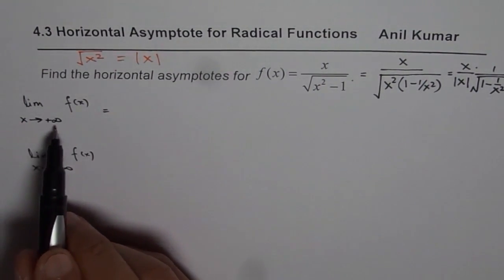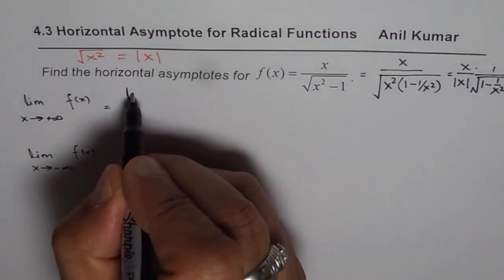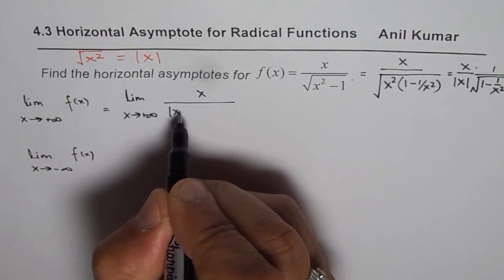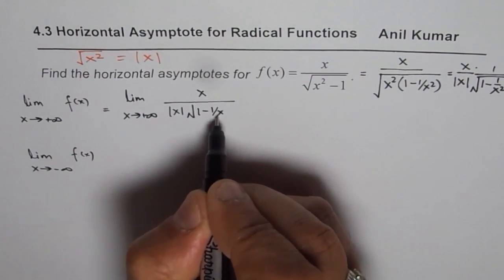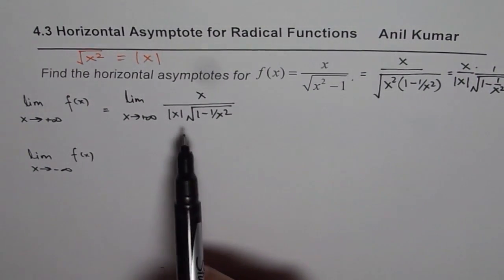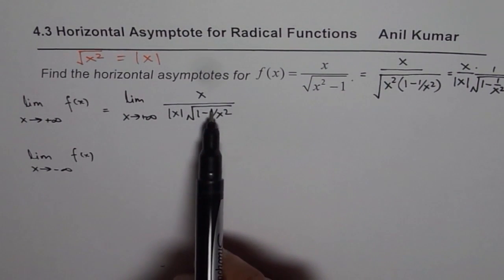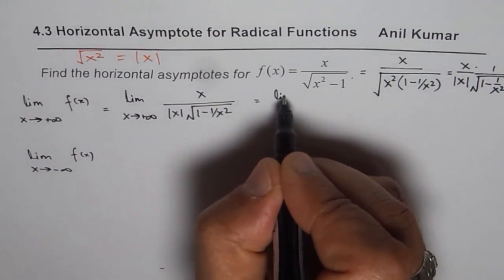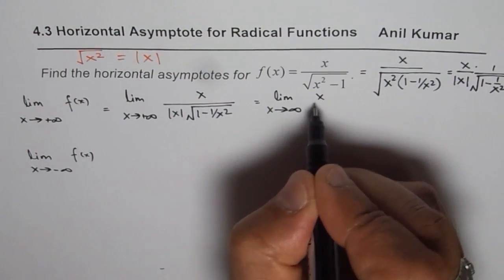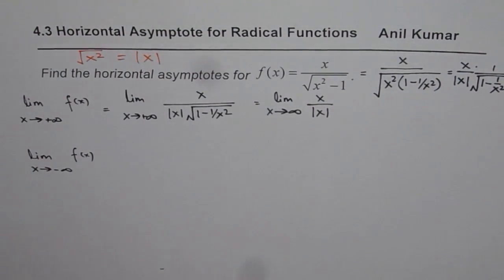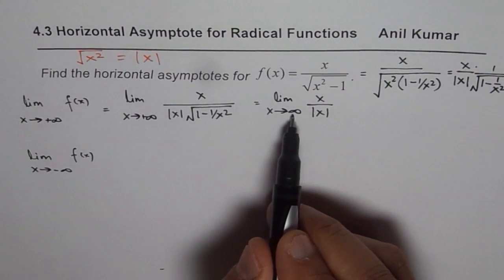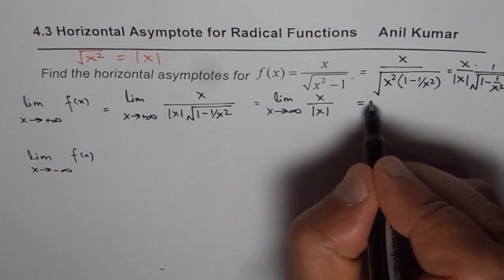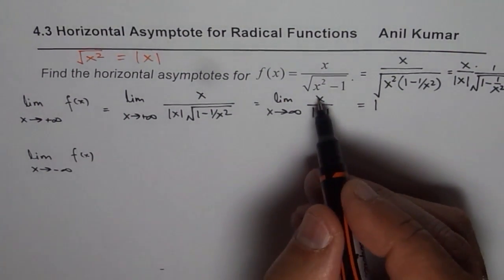Let's now calculate the limit for positive infinity and negative infinity. We have the limit of the function as x approaches positive infinity. The function is x over absolute x times the square root of 1 minus 1 over x squared. If x is a very large positive number, then 1 over x squared will be 0, so square root of 1 minus 0 will be 1. We are left with the limit of x over absolute value of x, which gives positive 1.